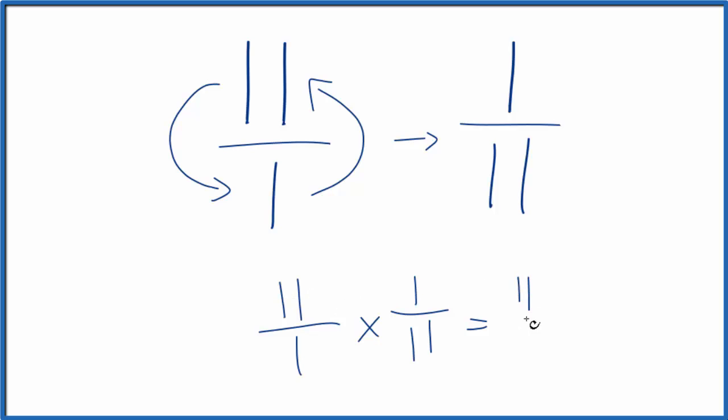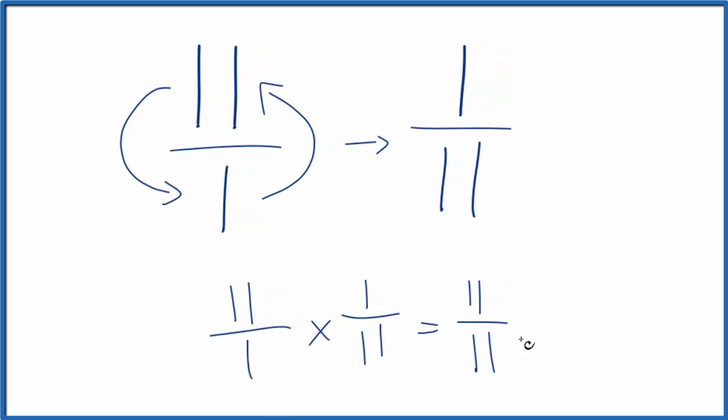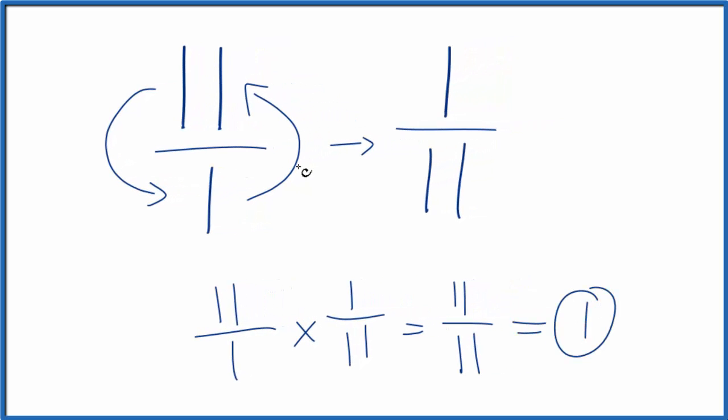And then 1 times 11, that equals 11. 11 over 11 is equal to 1. So if the original number multiplied by its reciprocal equals 1, we did this correctly.